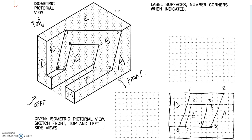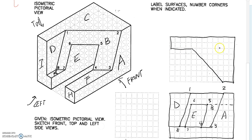So far we have completed all the surfaces in the front view. Let's move on to the top. For the top, we have surface K and surface F parallel to the top of the glass box. We are going to draw surface C first, then surface K. Surface F is right in front, two blocks deep, and connected to number 4, which is 6 blocks from the left side. So here is 4.